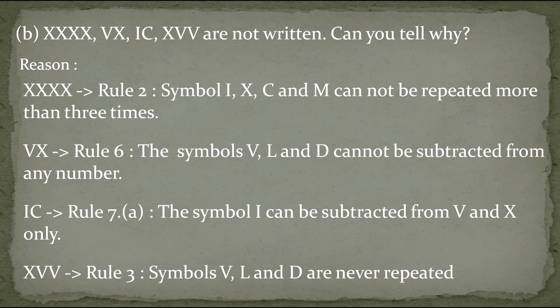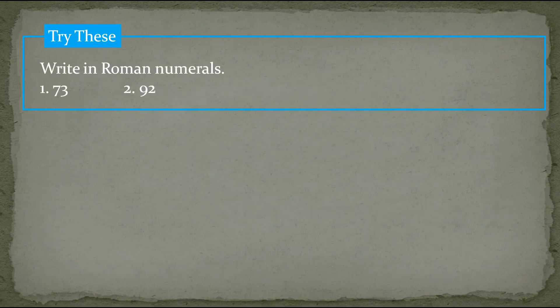Next, XVV was not used because of rule number 3, which says symbols V, L and D are never repeated. Here V is repeated twice, so XVV is also wrong.